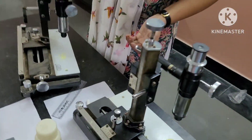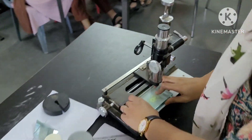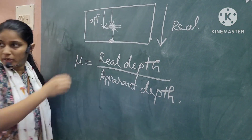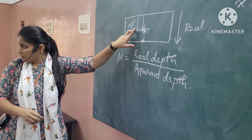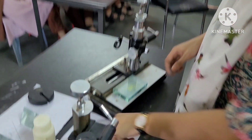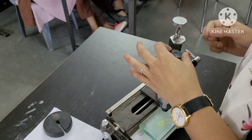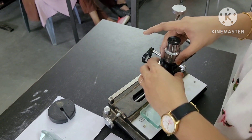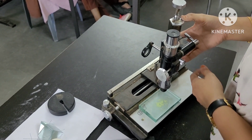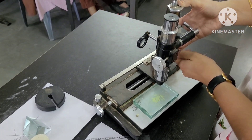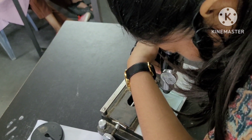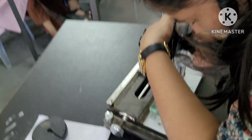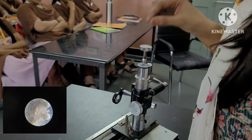Now we will place this slab on top of this lycopodium powder. When we place it, we are going to expect the depth to decrease. The depth is actually this much, but now the depth is going to decrease. When we are doing this second reading, you will not adjust the eyepiece — the eyepiece is already focused. You will not disturb this portion; you will only change the height. You can loosen it a little bit, then look into the eyepiece and just lift it a little bit upwards. At one particular point, you can tighten it again when you are getting a clear image of the powder.